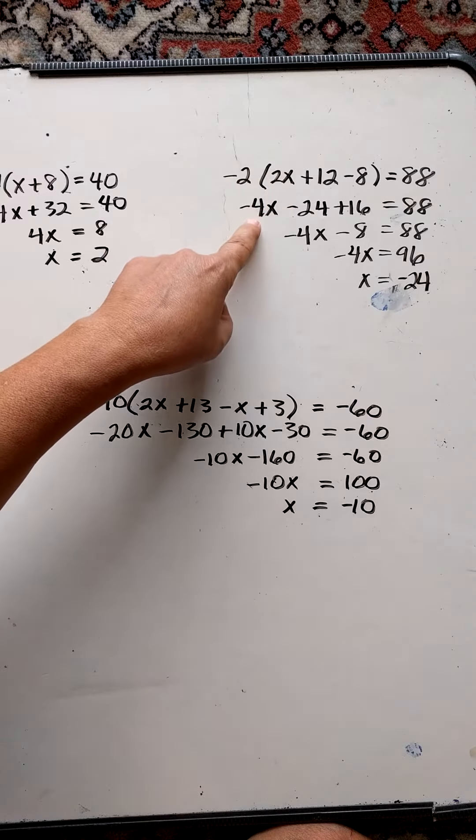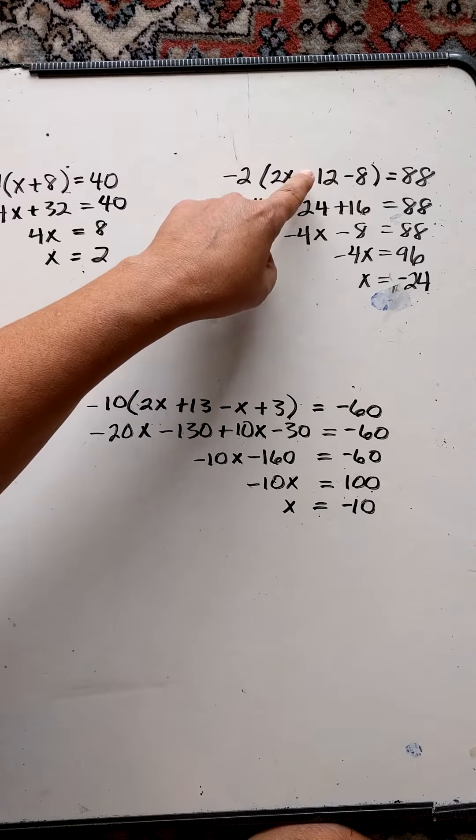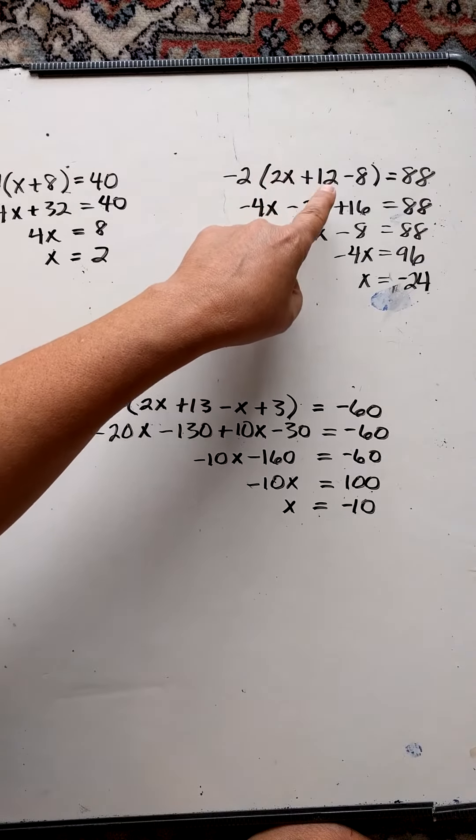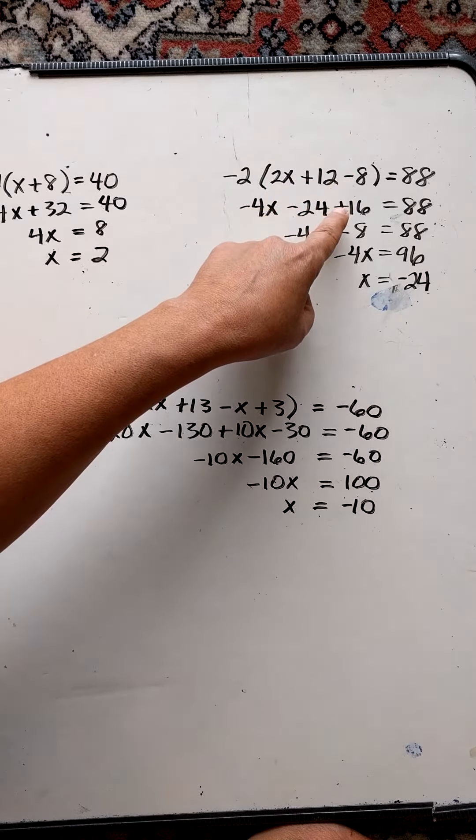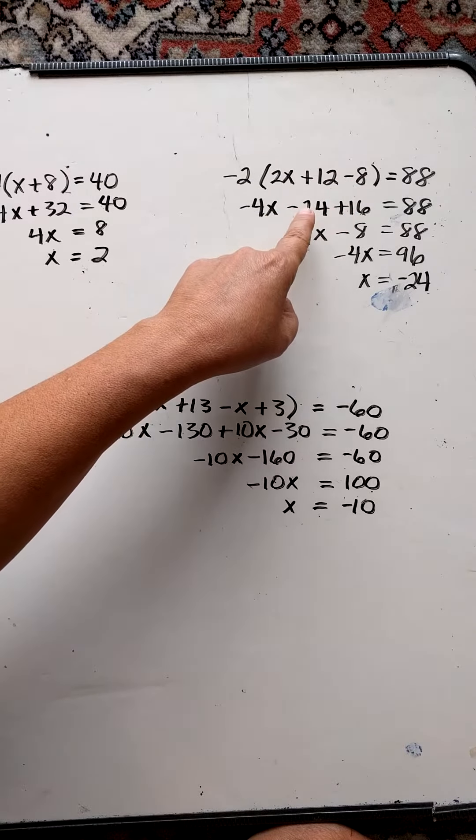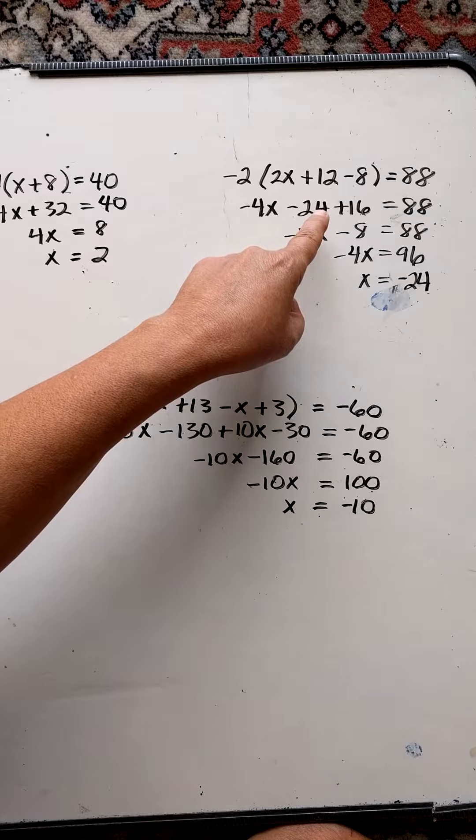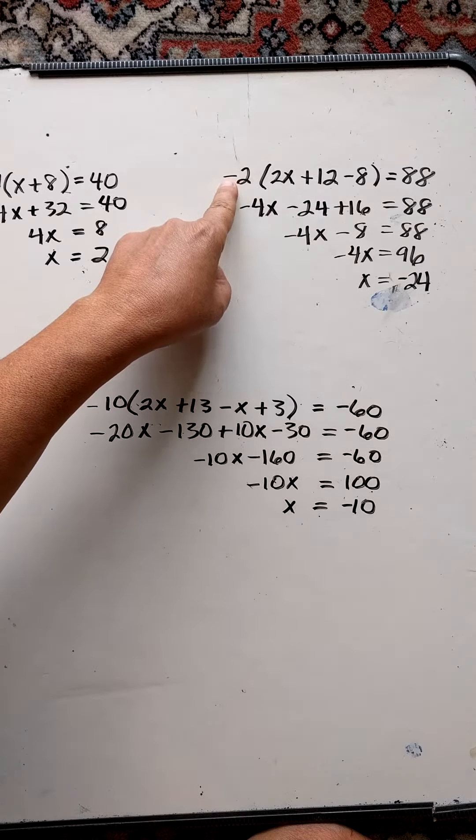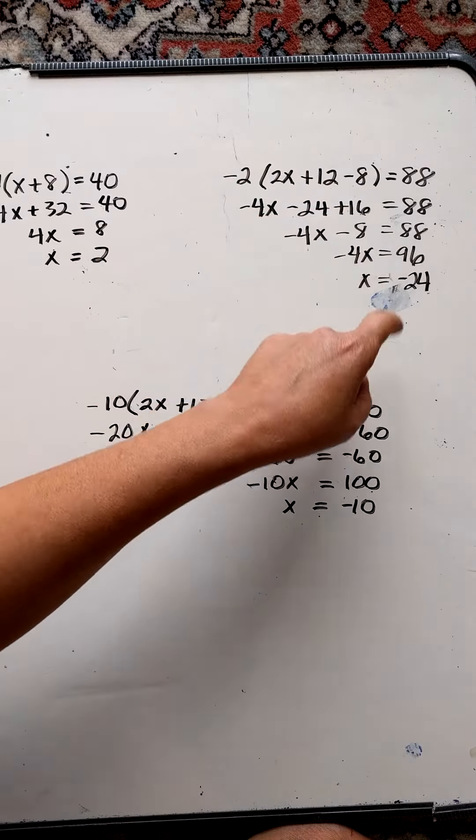Negative and a positive is a negative. And then I flip the sign here, and I just say 2 times 12 is 24. Flip the sign here. 2 times 8 is 16. And the reason I do that is just to make sure I catch the negative sign in all these terms, and that equals 88.